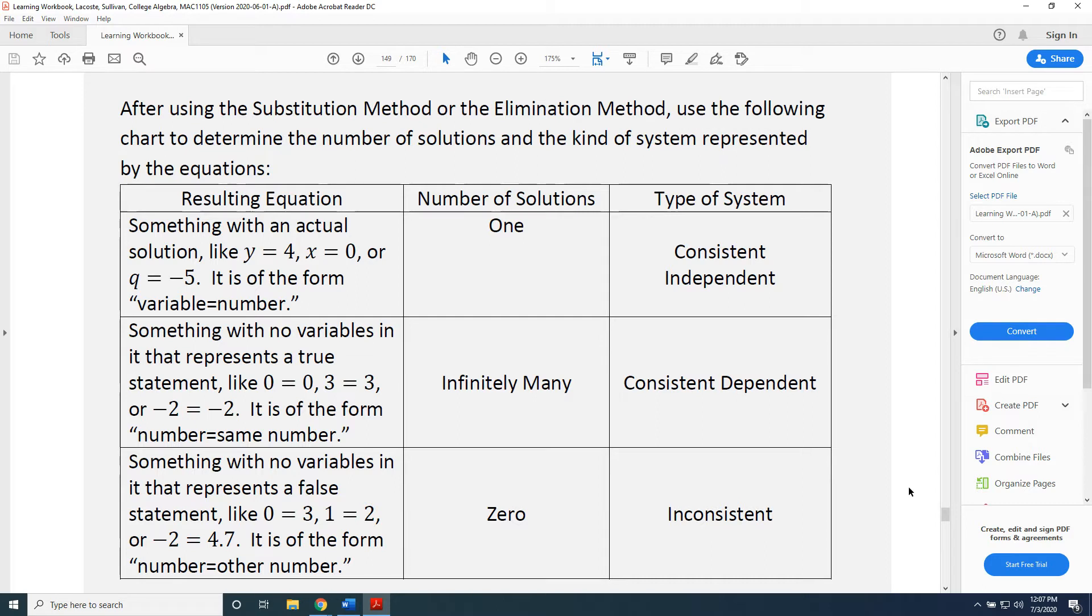Let's now move one row at a time. Row 1. Let's say you use the substitution or elimination method, and after you're done, you get a resulting equation that looks something like a solution, like y equals 4, or x equals 0, or q equals negative 5, generally something of the form variable equals number. Then, the number of solutions to the system is 1, and the type of system is consistent independent.